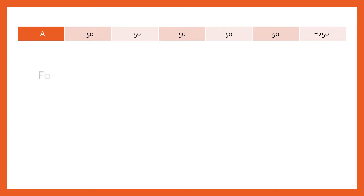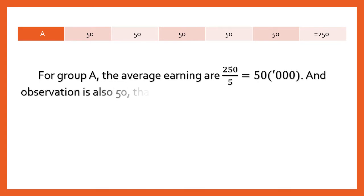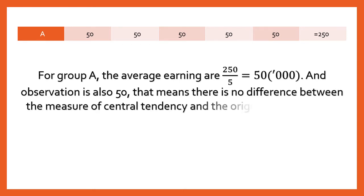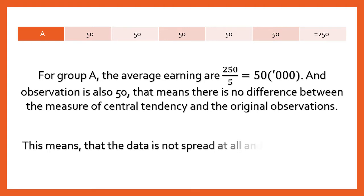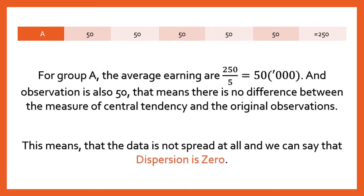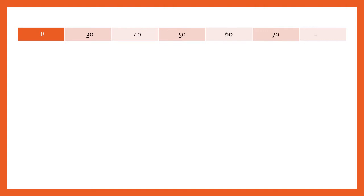For Group A, all five observations are 50,000 and the average is also 50,000. There is no difference between the central tendency and the observations — the data is not scattered at all, so the dispersion is zero. For Group B, the data is 30, 40, 50, 60, 70 thousand. The average is 50,000, and some observations are below or above 50,000 but not very far away.